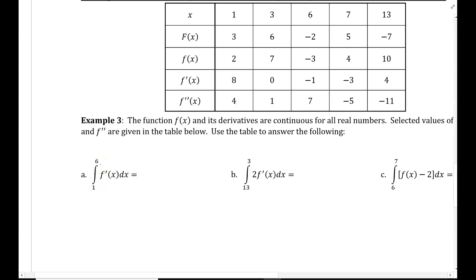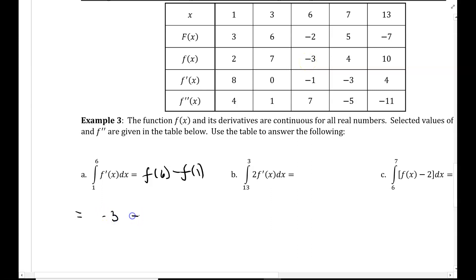The integral from 1 to 6 of f prime of x dx equals f of 6 minus f of 1. Going to the table: f at 6 is negative 3, and be careful — you always need subtraction, so if your second term is negative, put parentheses around it so you don't lose a negative. f at 1 is 2. So negative 3 minus 2 gives us negative 5.